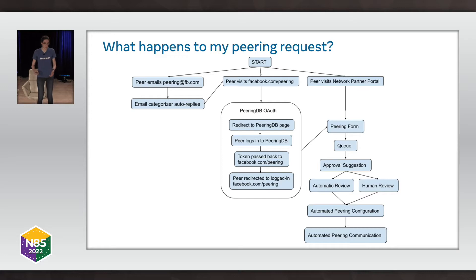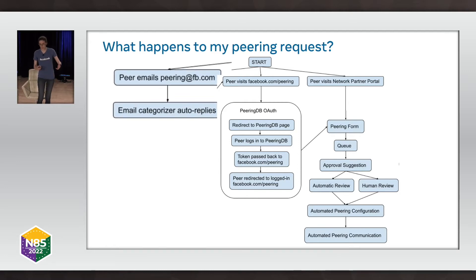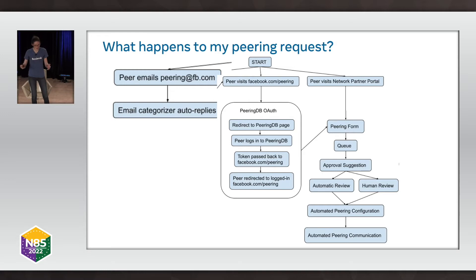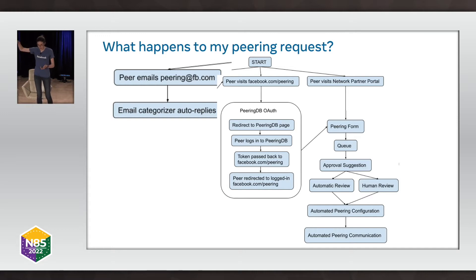Let's go through the step-by-step flow. First, if you email peering@fb.com, you'll hit the email categorizer and we'll auto-reply. We don't just reply to every request that comes in because some may not be peering requests. We have a service that goes through and categorizes: public peering request, private peering request, other kind of request, or mailing list. For anything deemed a public peering — and soon private peering — we'll reply back with 'please go to facebook.com/peering.'